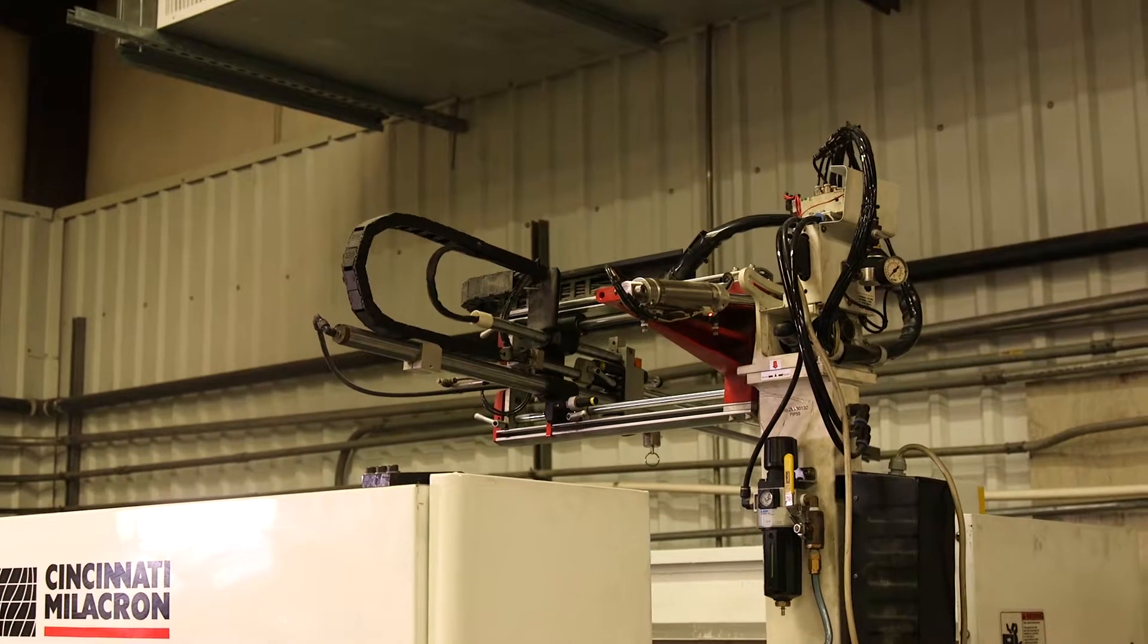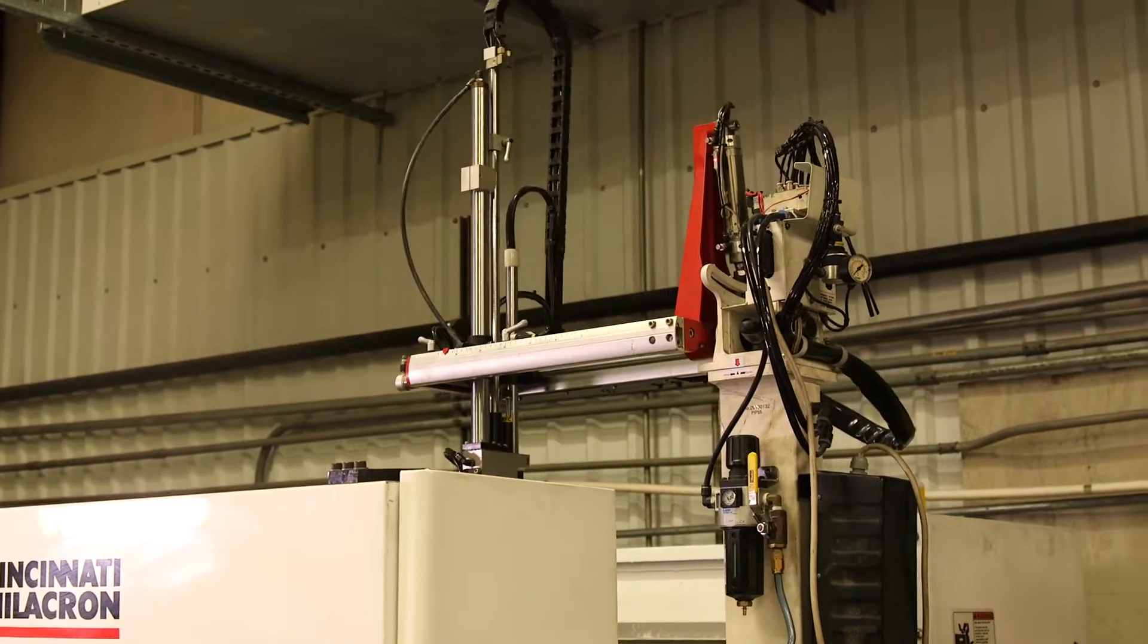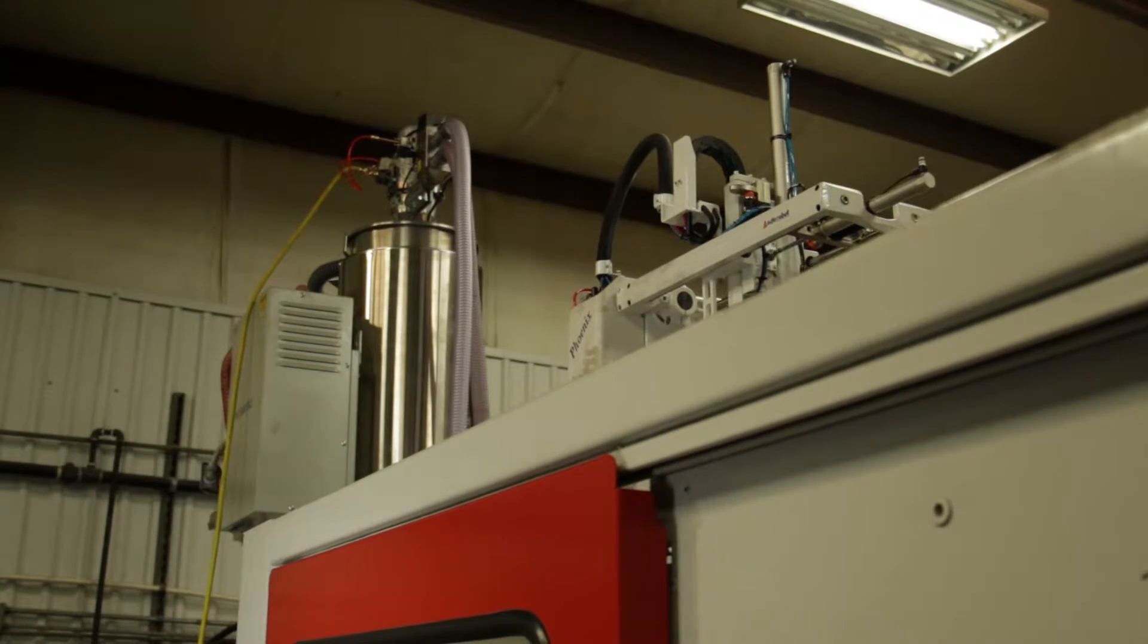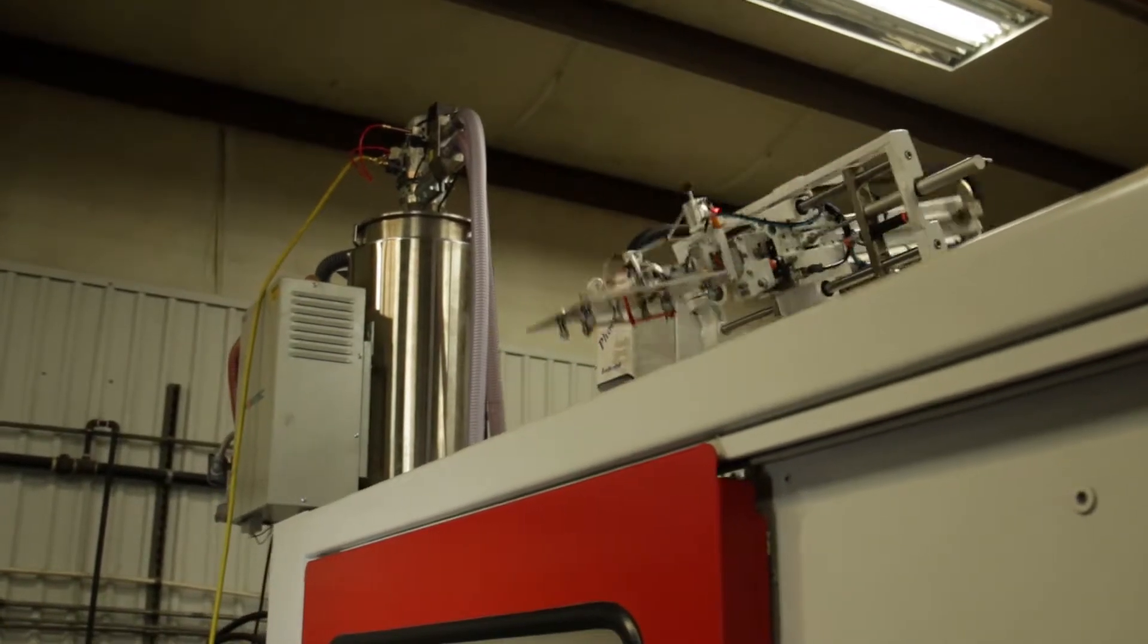When people typically think of automation, they generally picture multi-axis robots turning and moving in and out, removing parts from the mold and placing them in a package.